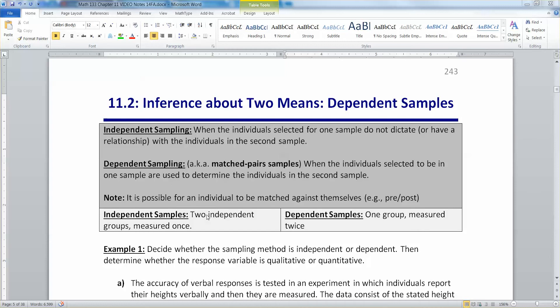A way to see this is independent samples are two independent groups that are measured one time. So they call up two separate groups of people and they ask them a question. Dependent samples are one group of people but you measure them twice. You measure one side then the other side, you measure beginning and end, that kind of thing.